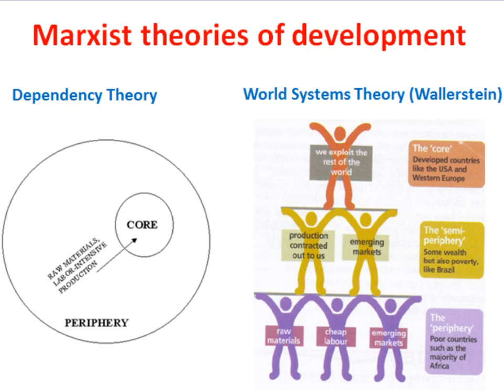Let's remind ourselves of Dependency Theory. According to Dependency Theory, global inequality exists because resources flow from a poor periphery of countries into a rich core of wealthy states. André Gunder Frank has argued that development and underdevelopment are the opposite faces of the same coin. In other words, development is an uneven and hierarchical process which sees economic power concentrated in a core of rich nations at the expense of the periphery of poorer countries.